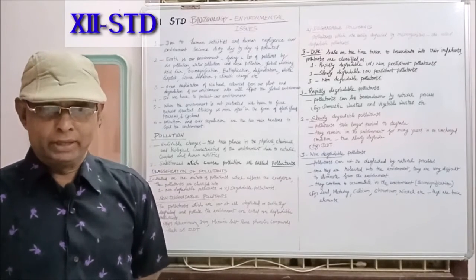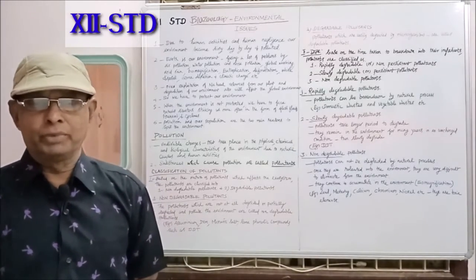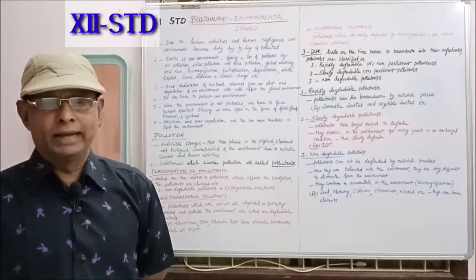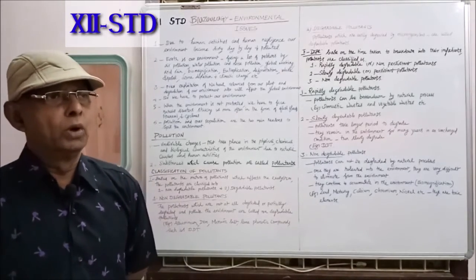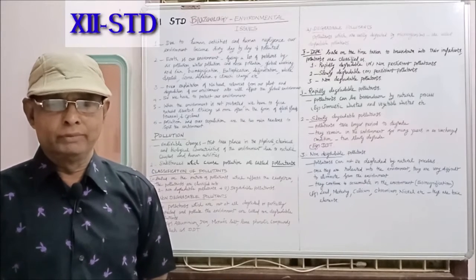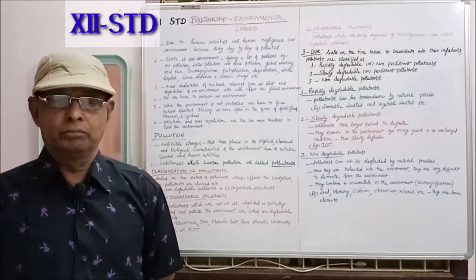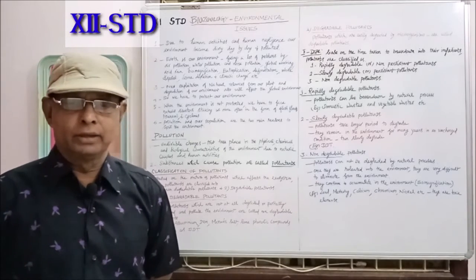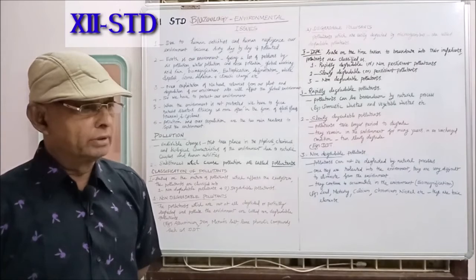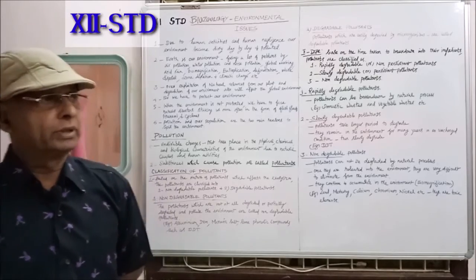Non-degradable pollutants are those that cannot be degraded by natural processes. Once released into the environment, they are very difficult to eliminate and continue to accumulate — that process is called bio-magnification. When non-degradable pollutants accumulate in the environment continuously, that process is called bio-magnification. Examples include lead, mercury, calcium, chromium, and nickel. These are toxic elements that cause many toxic effects to the environment.